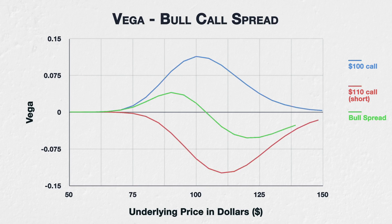This chart shows the vega of a $100–$110 bull call spread in green, and of the two individual options that combine to create this spread. The $100 call option in blue is purchased, and therefore gives us positive vega, meaning it will gain value if implied volatility increases. However, the $110 call option in red is sold, and therefore gives us negative vega, meaning the increase in value of this option when implied volatility increases will actually represent a loss for us. The bull spread line is simply the sum of the vega for the $100 call long and the $110 call short.